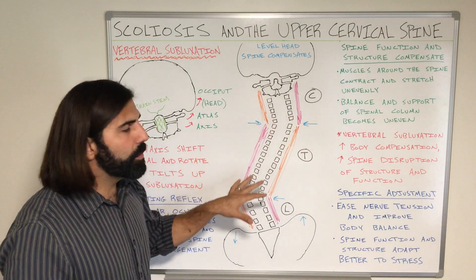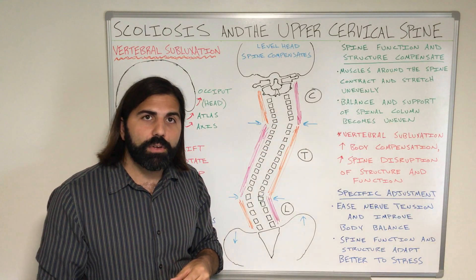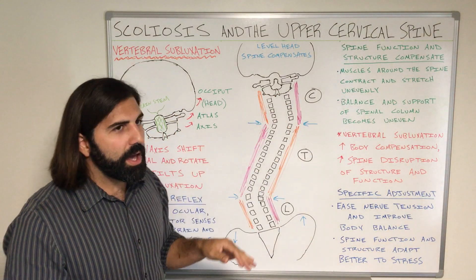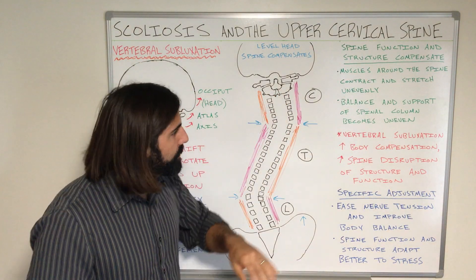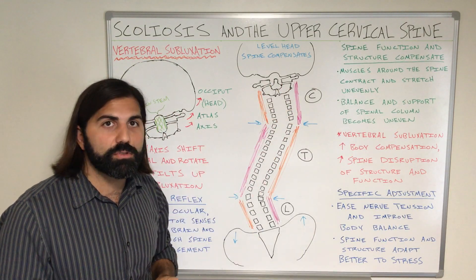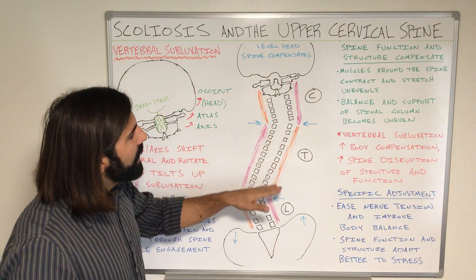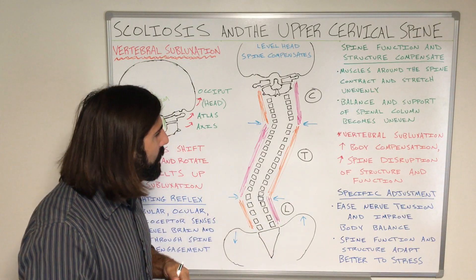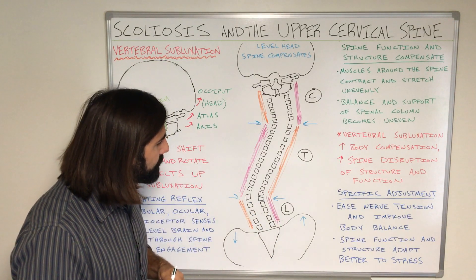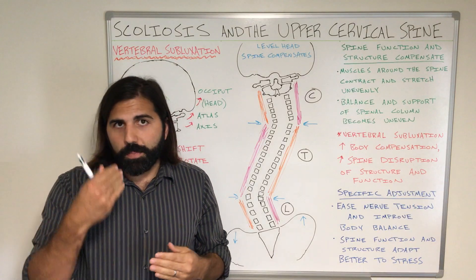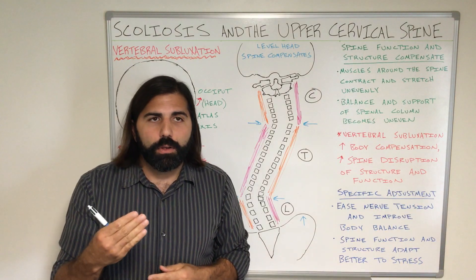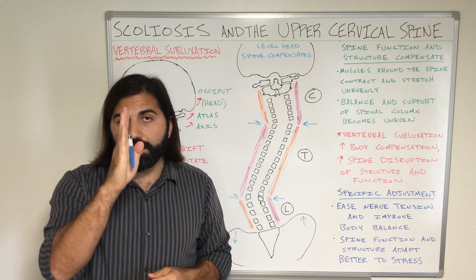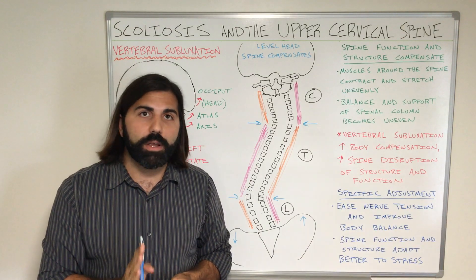These abnormal curves are often going to be found in areas of transition in our spine. In our spine we have three general areas: the top area is called the cervical spine, the middle area is called the thoracic spine, and the lower portion is called the lumbar spine. When we look at our spine front to back or back to front, we shouldn't see any real deviation in that curve — if anything it should be fairly straight, or as straight as possible.